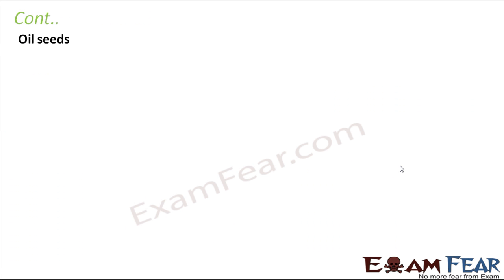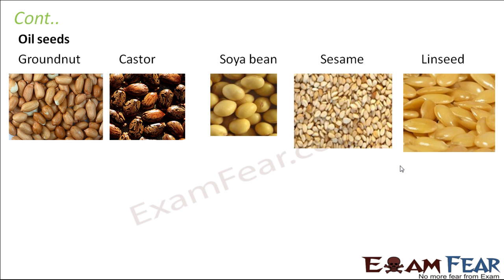We also have oil seeds. Oil seeds are a good source of proteins. For example, groundnut, castor, soya bean, sesame, and linseed. Now why are they called oil seeds? Because these seeds are very rich in oil, and that is why oil is also extracted from these seeds — that is how we get castor oil, mustard oil, and groundnut oil. Many different types of oils are used for cooking purposes, and these oils are actually obtained from seeds which are rich in oil.